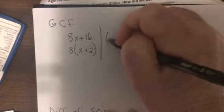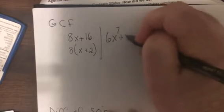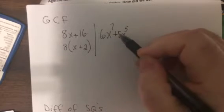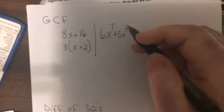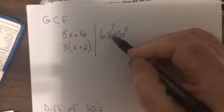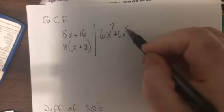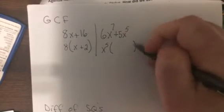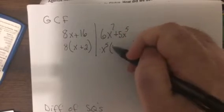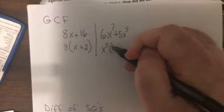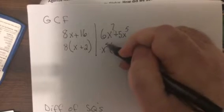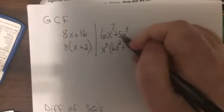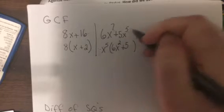So if I had 6x to the 7th plus 5x to the 5th, you'd say do I have a number that goes into 6 and 5? And hopefully you'd say I don't see one other than 1. And is there an x in every term? There is. It's the smallest power that occurs, so it'd be 1x to the 5th or x to the 5th. So 1 times 6 is 6. When you multiply two things same base you add, so 5 plus what is 2? You'd say x squared. Plus 1 times 5, and then you already have x to the 5th.